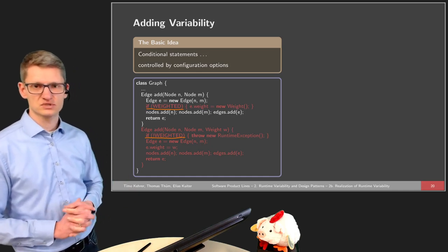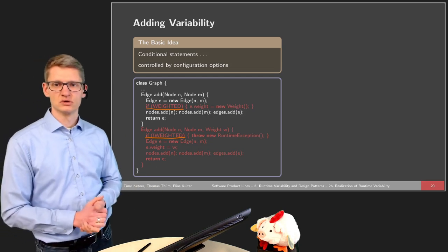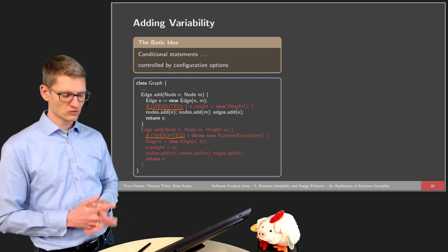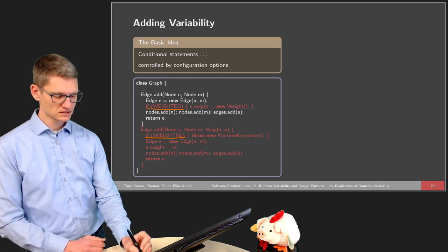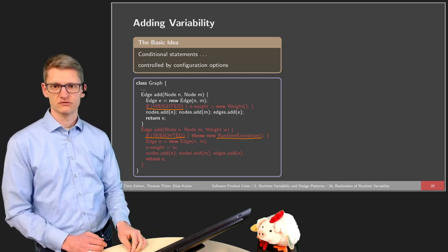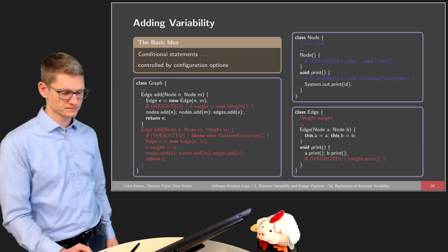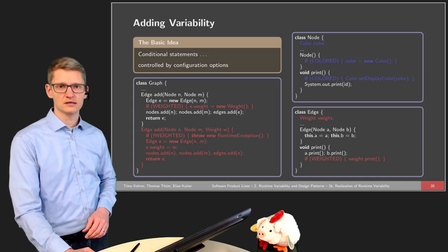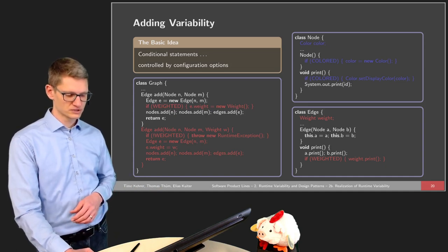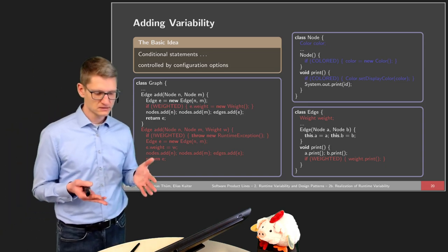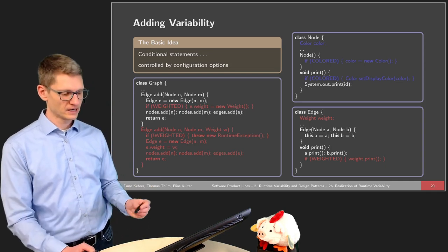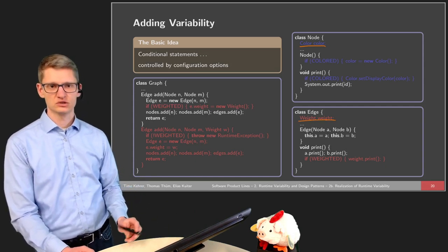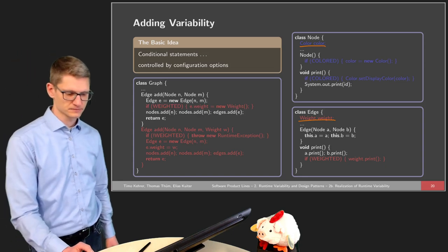It's a bit more complicated when it comes to methods, because Java doesn't allow us to wrap a whole method with a conditional statement. What we can do is throw a runtime exception if the method is called even though it's not allowed — so if we don't have weights, it wouldn't make sense to call that method. We see similar procedures for the feature 'colored'. But we already see that some parts don't fully align with this principle: the fields color and weight are always there, simply not used and not initialized if a certain feature is not chosen.